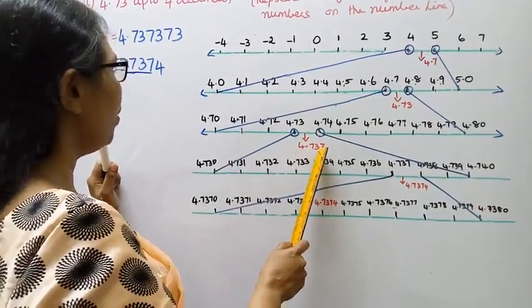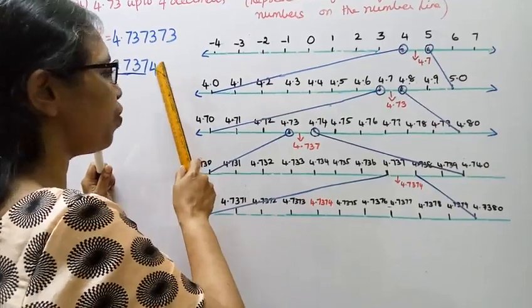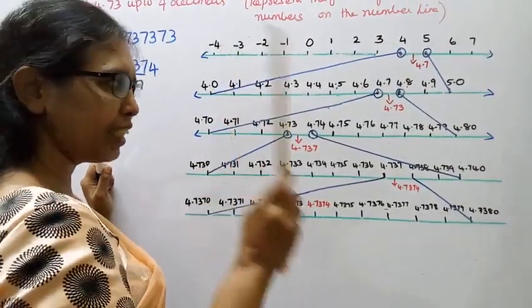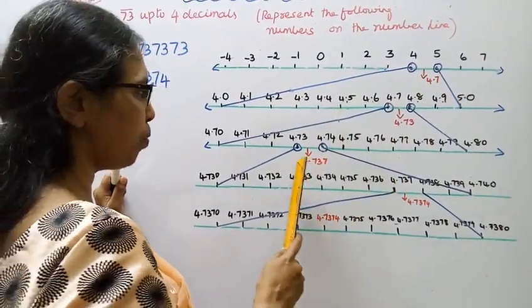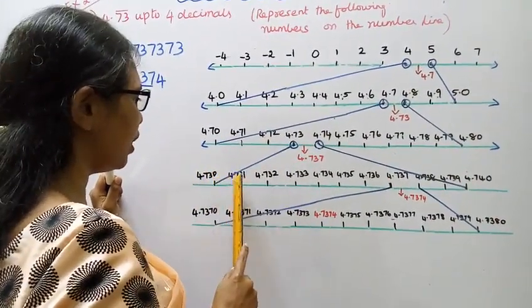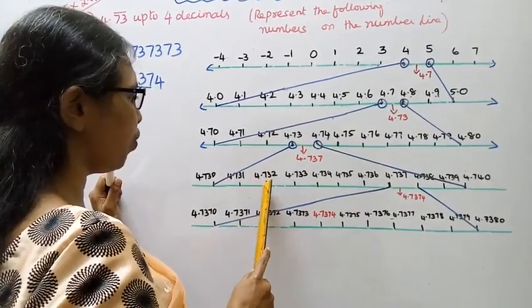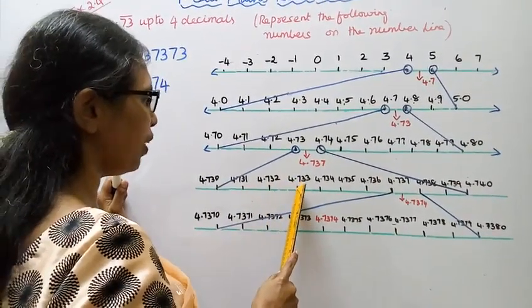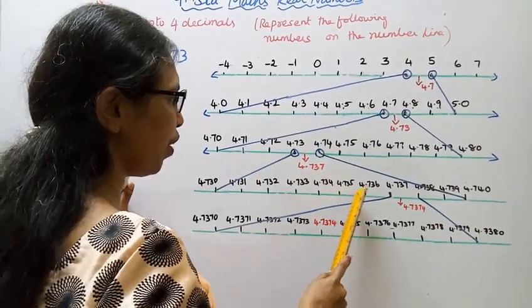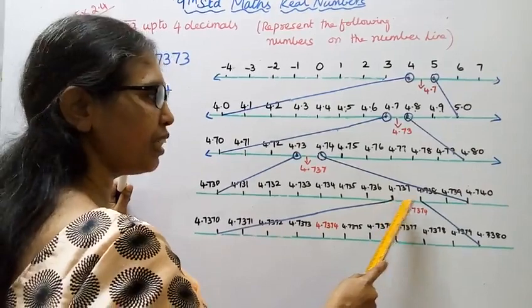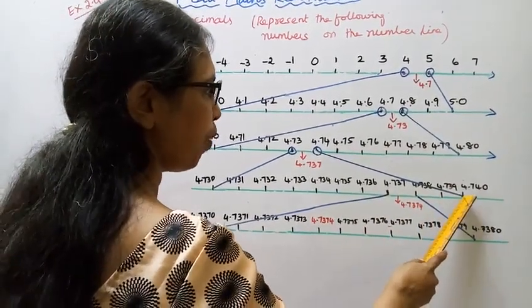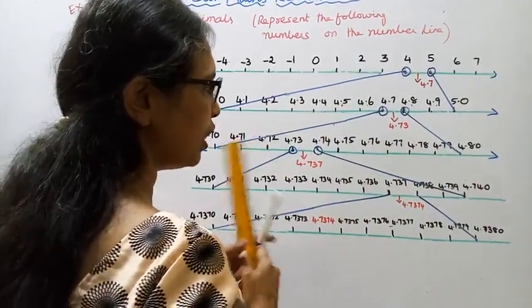We will mark exactly. We will see 4.730, 4.731, 4.732, 4.733, 4.734, 4.735, 4.736, 4.737, 4.738, 4.739, 4.740.